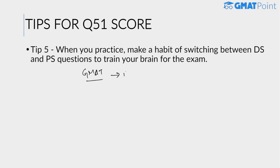We suggest that when you practice, use a system where DS and PS questions come together in mixed order. Do visit the GMAT Point portal — in our daily targets we give five questions each day with a good mix of PS and DS, so you get all possible arrangements. This helps wire your brain to switch between PS and DS questions alternately. Many candidates ace both types individually but lose marks in the exam due to this — practice in an exam environment with mixed question types.